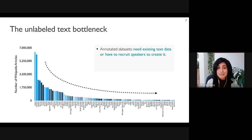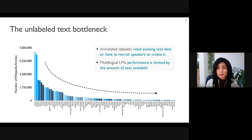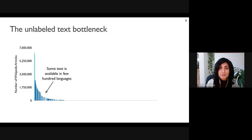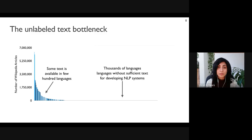The lack of unlabeled data is a significant bottleneck. Annotating datasets without existing text to annotate would require recruiting speakers to create text from scratch, which is far more expensive. The performance of multilingual models is limited by the amount of text available. While we have some text in a few hundred languages from Wikipedia and Common Crawl, there are thousands of languages without sufficient text for building NLP systems.